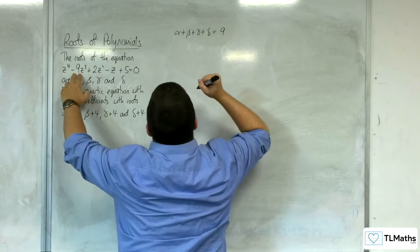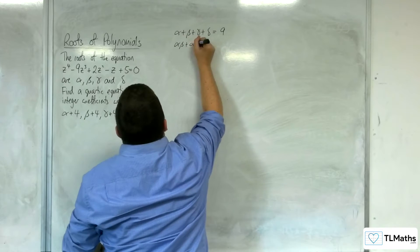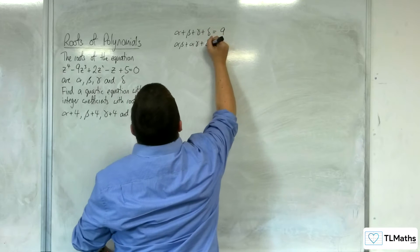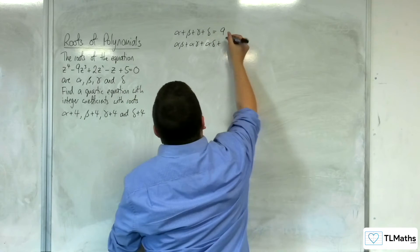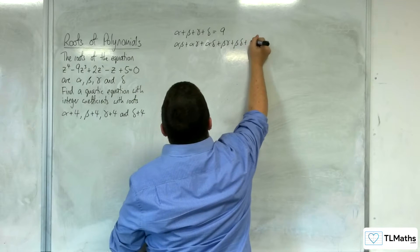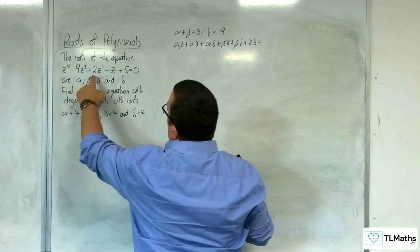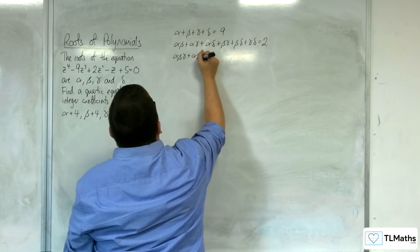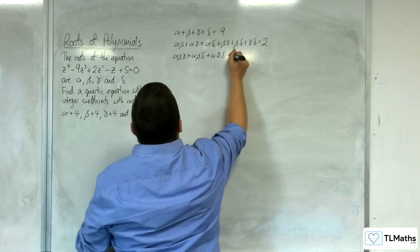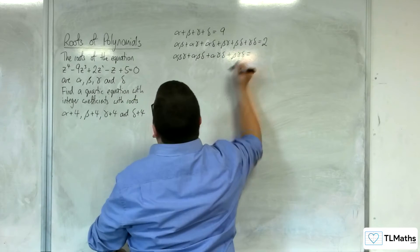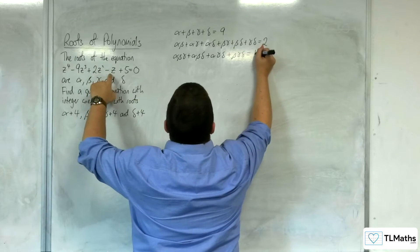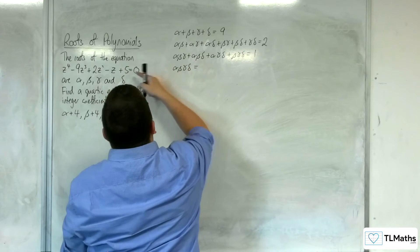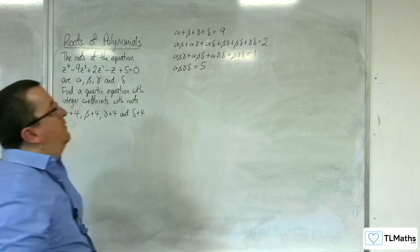Then alpha·beta + alpha·gamma + alpha·delta + beta·gamma + beta·delta + gamma·delta equals 2. Then alpha·beta·gamma + alpha·beta·delta + alpha·gamma·delta + beta·gamma·delta equals the negative of minus 1, so plus 1. And alpha·beta·gamma·delta equals 5. So we've got those values.